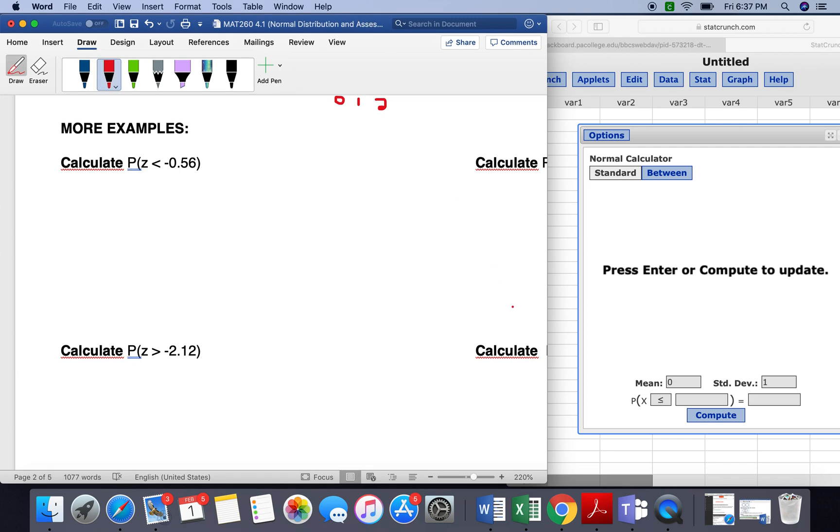In this video, we will do some examples of finding the area under a standard normal curve. So the first example we have here is z is less than negative 0.56.